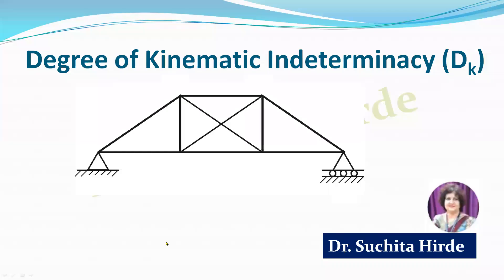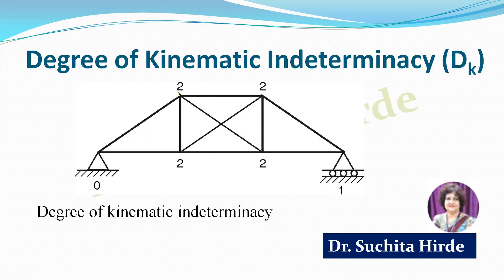Let us start with a simple example: calculate degree of kinematic indeterminacy dk for this truss. At each joint of the truss, degree of freedom is 2. At the hinge support, U and V displacements are not possible, so degree of freedom is 0. At the roller support, U displacement is possible, so degree of freedom is 1. Adding all values — 2 plus 2 plus 2 plus 2 plus 1 — total degree of kinematic indeterminacy for this truss is 9.